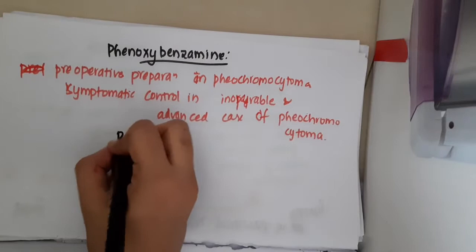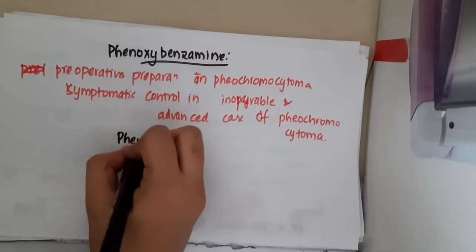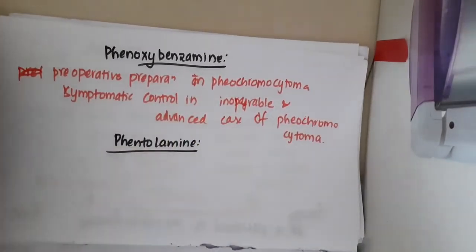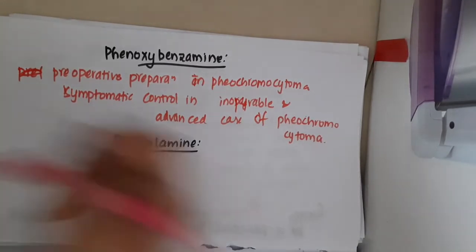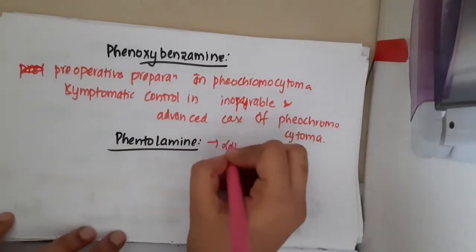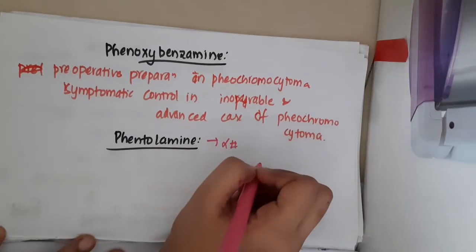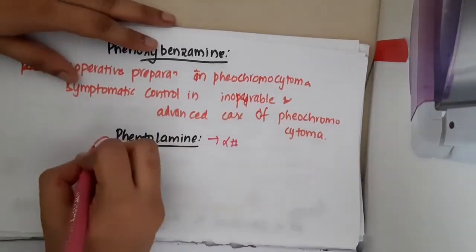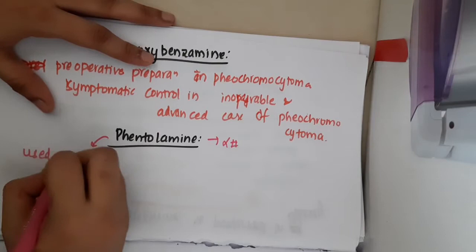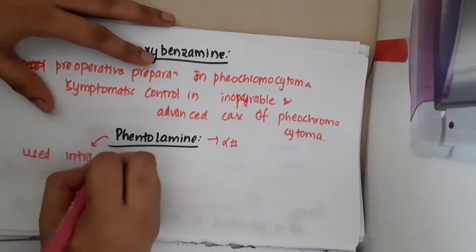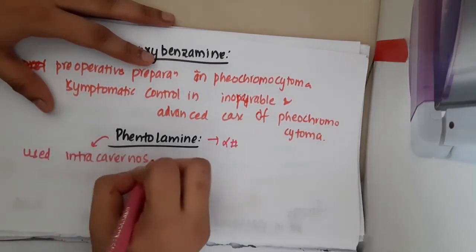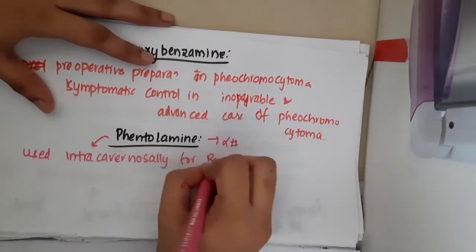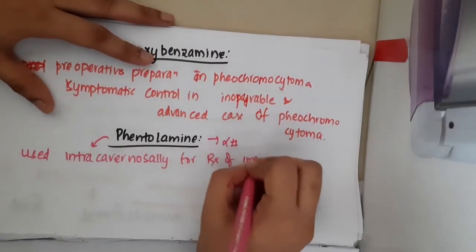Hello friends, let us now learn some important points about Phentolamine. What is Phentolamine? It is an alpha blocker and it is mainly used intra-cavernously for the management or treatment of impotency.